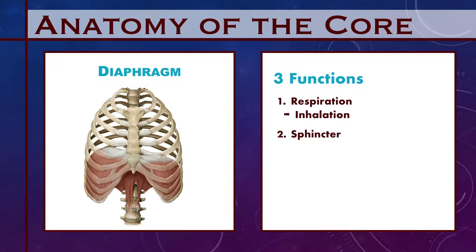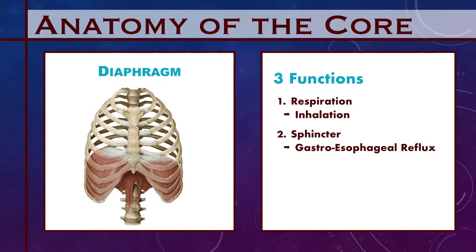Did you know the diaphragm also has a sphincter function? It prevents stomach acid from backing up into the esophagus. People with gastroesophageal reflux, or GERD, are typically quite unstable and breathe abnormally. So if someone with acid reflux wants to fix this problem — a problem that can lead to esophageal cancer — they must change the way their diaphragm functions. Lastly, and more in keeping with the topic of this video, is the diaphragm's role in core stabilization.